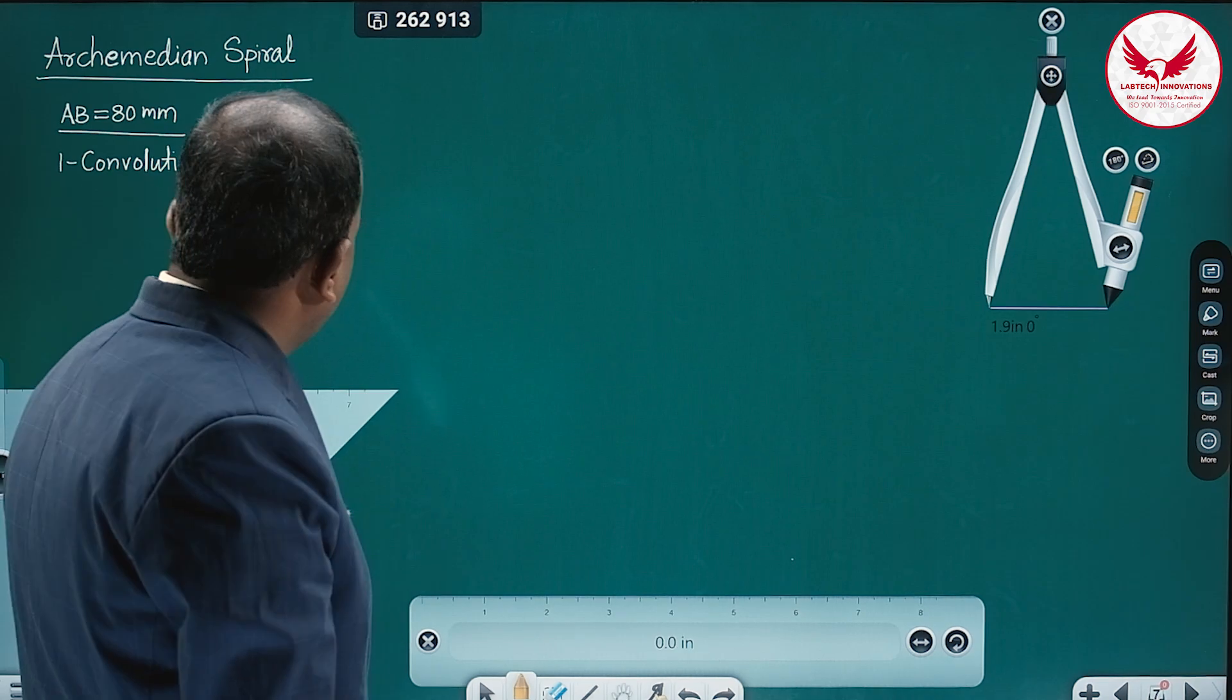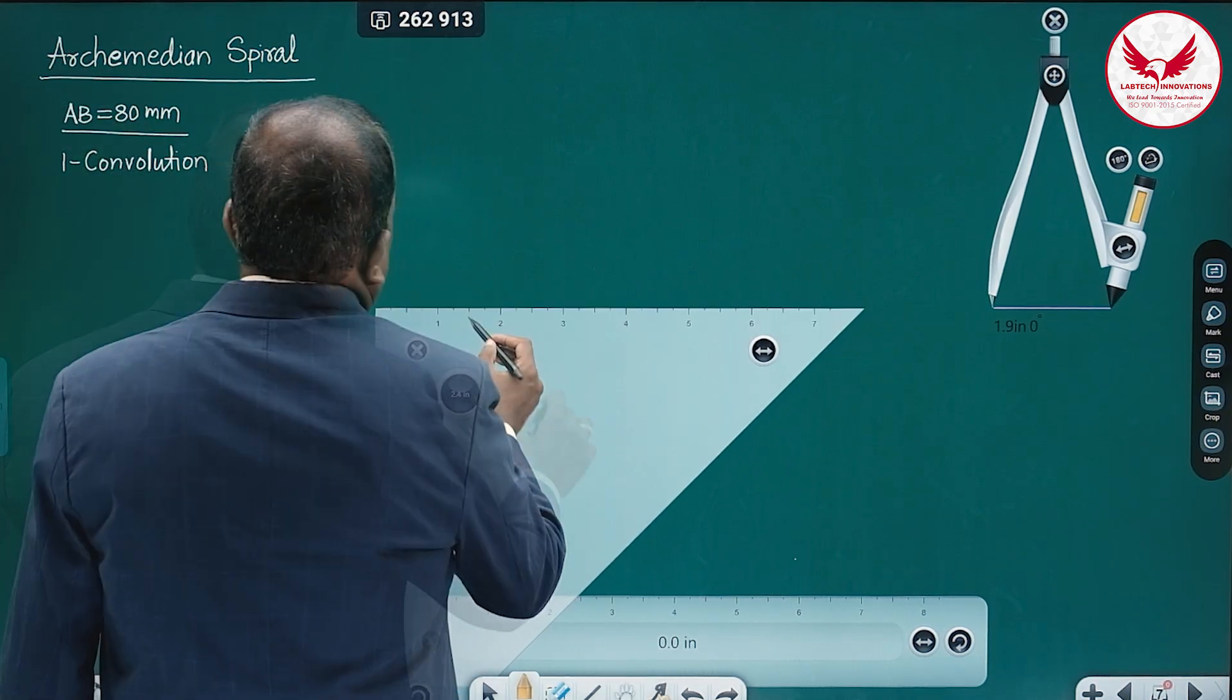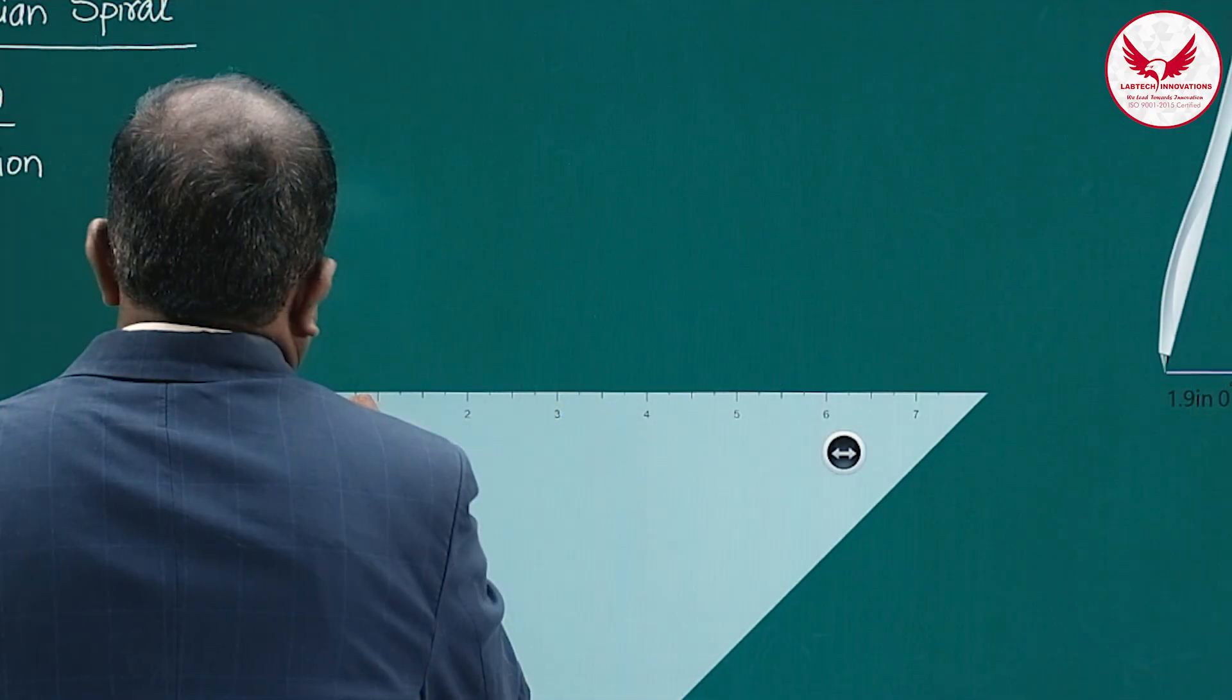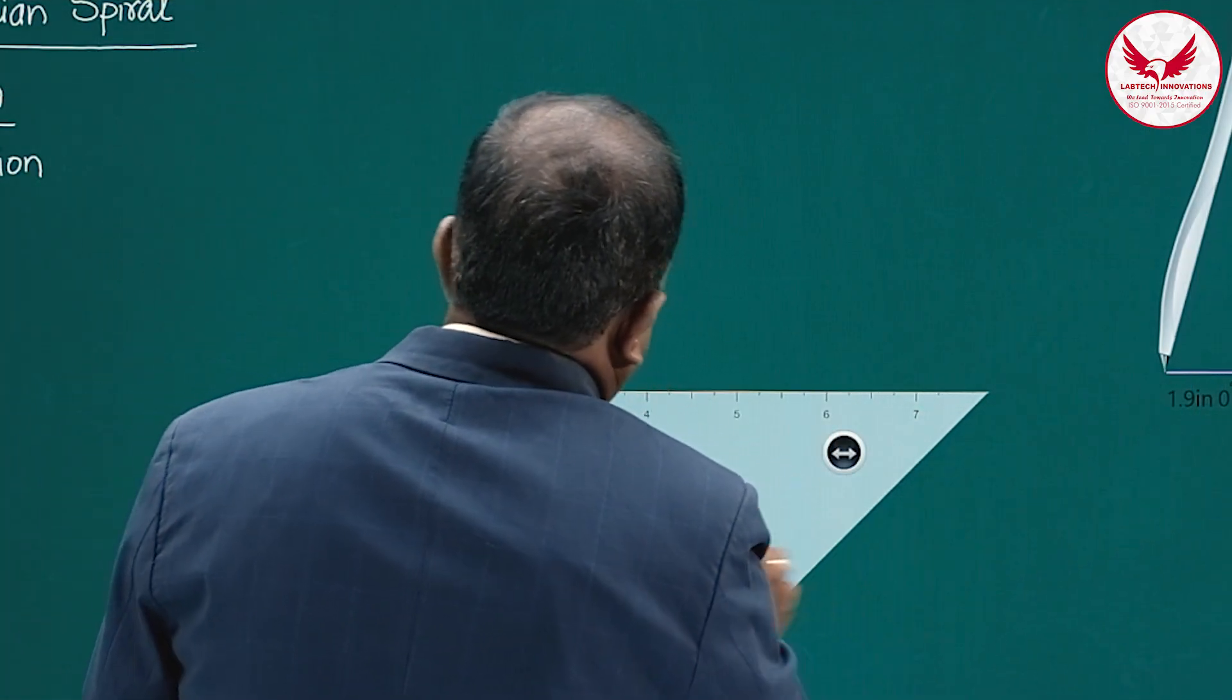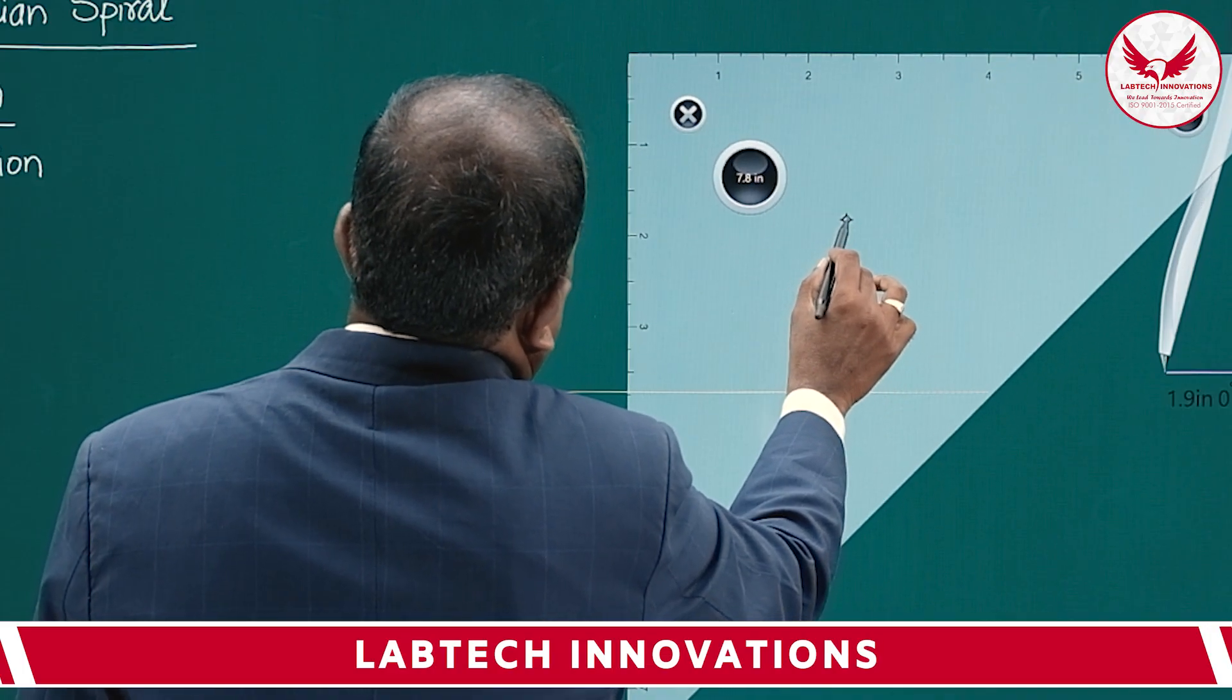Actually, for drawing the Archimedean spiral, initially I will suggest draw two intersecting lines. So one is going to be a horizontal line and the other is going to be a vertical line.